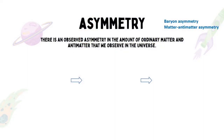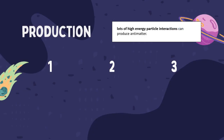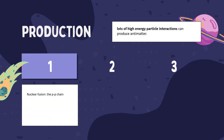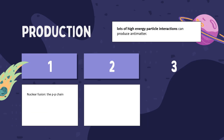There is an observed asymmetry in the amount of ordinary matter and antimatter that we observe in the universe. Our world is comprised almost entirely of regular matter, such as protons and neutrons. Antimatter is not readily observed in the universe. However, it is produced in lots of high-energy particle interactions, such as the PP chain reactions that are involved in nuclear fusion in the cores of stars such as our own. Antimatter is also naturally produced in the decay of many radioactive isotopes.